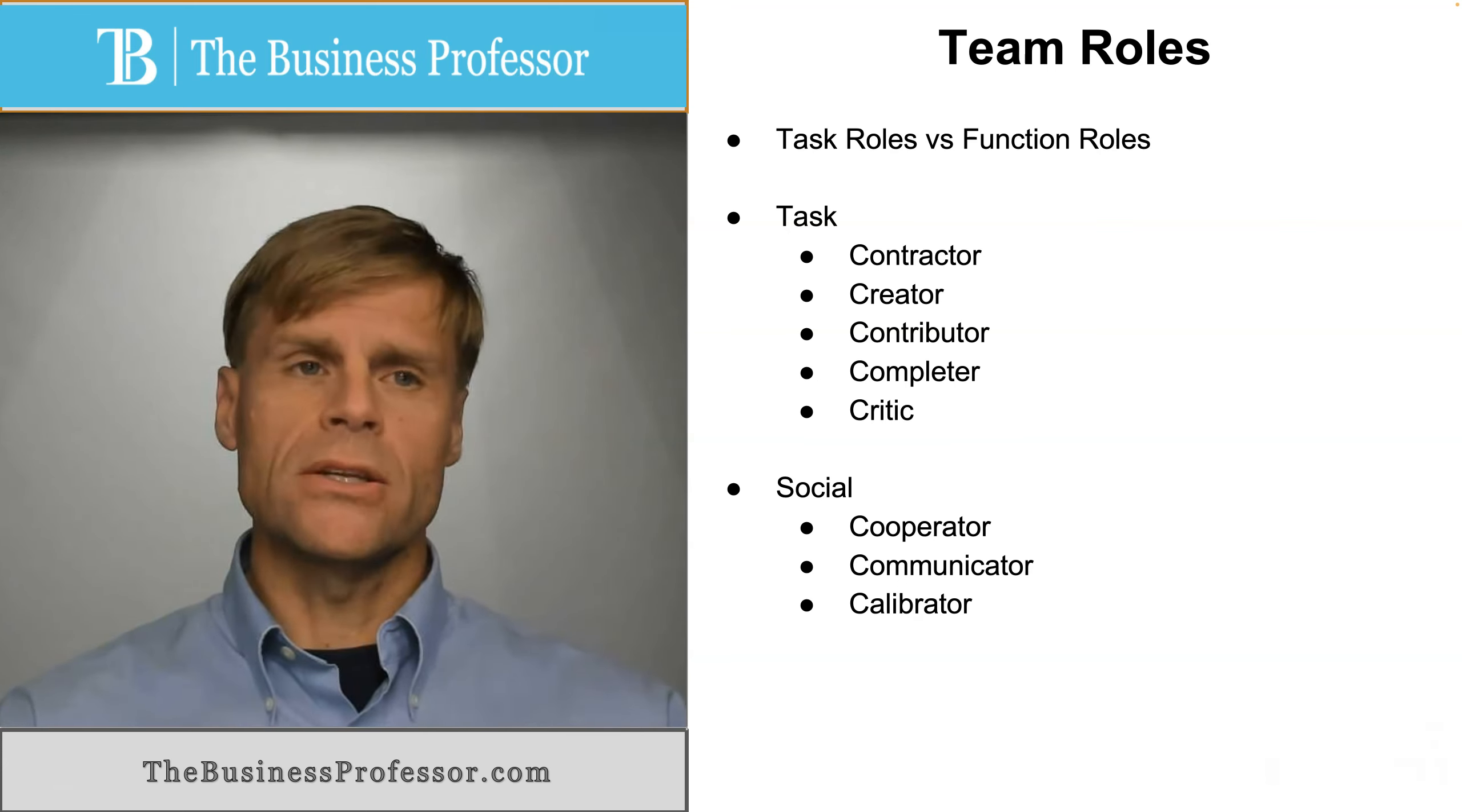So cooperators tend to empower leaders and make certain that the individuals orchestrating tasks have the support necessary from the team. Communicators facilitate communications and make certain that information is adequately transmitted to members of the team. And then calibrators make certain that all power struggles or disagreements or other misunderstandings between team members are resolved or handled appropriately.